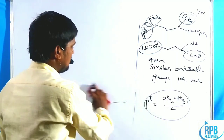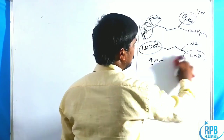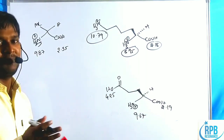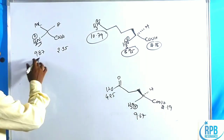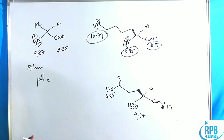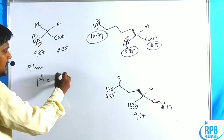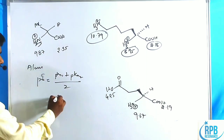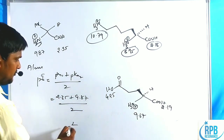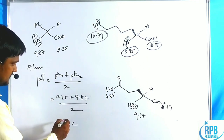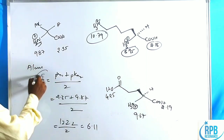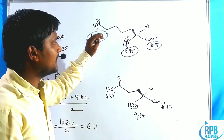These calculations appear in previous-year CSIR, GATE, and JEE Mains exams. Example 1 — Alanine: pI = (pKa1 + pKa2) / 2 = (2.35 + 9.87) / 2 = 12.22 / 2 = 6.11. The isoelectric point of alanine is 6.11.